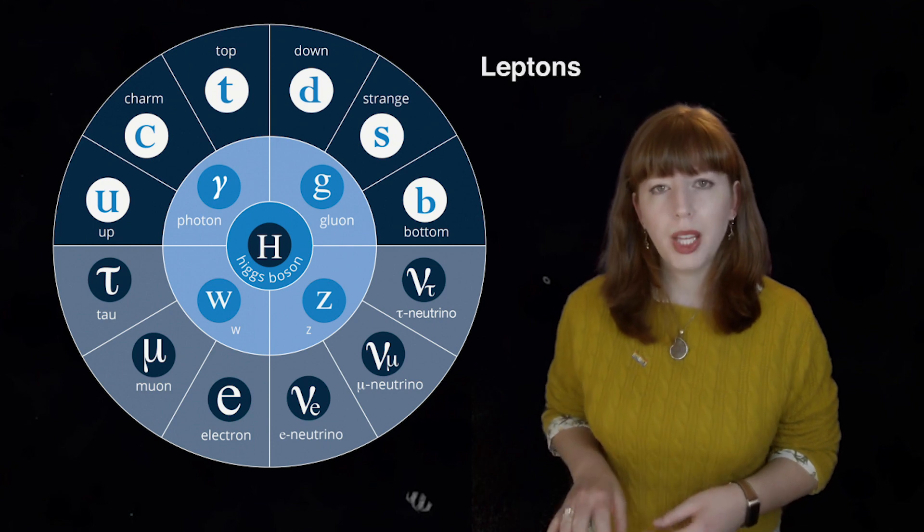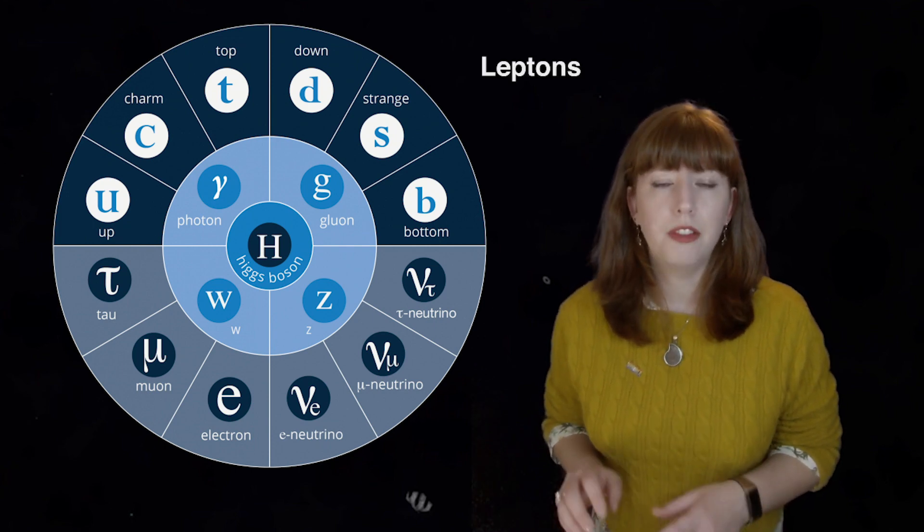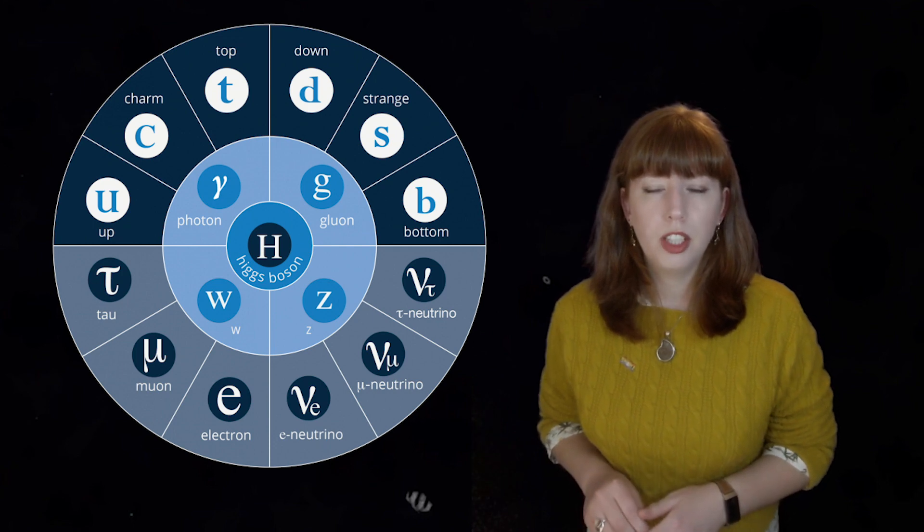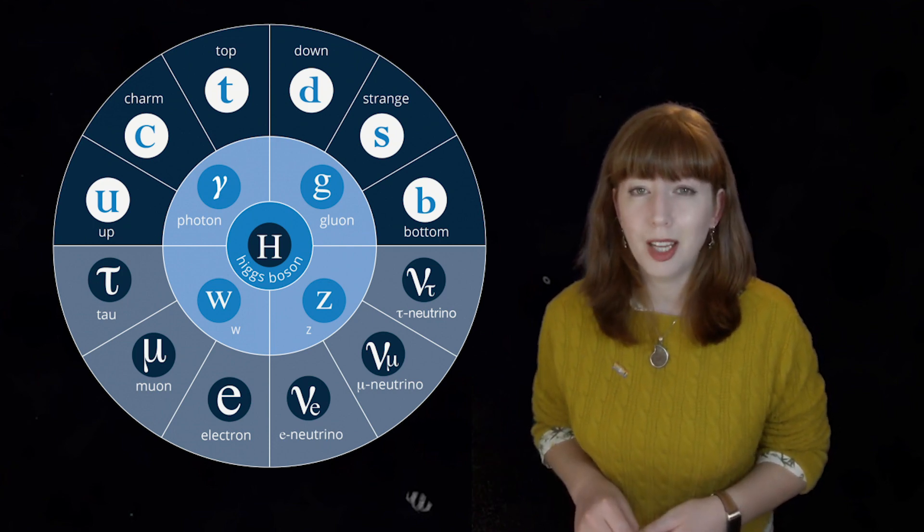On the bottom, we have the leptons. We have the charged leptons and the neutral leptons. You might recognise the electron in that bunch.